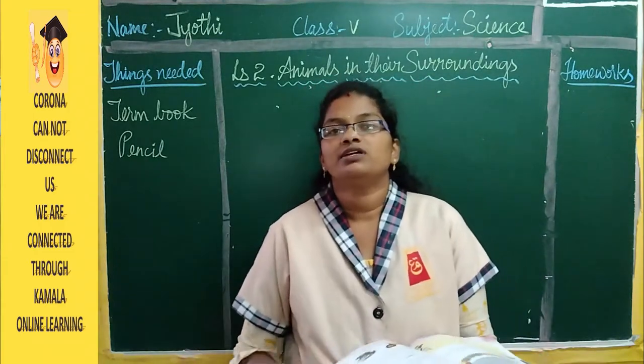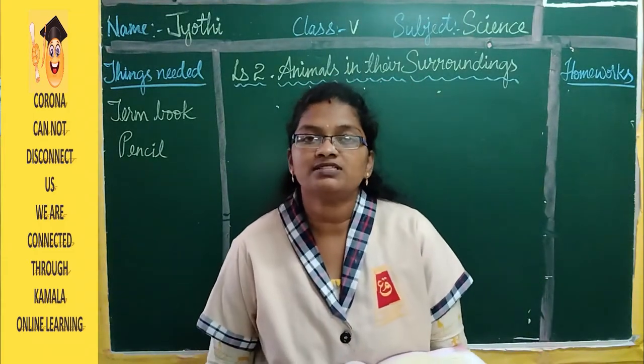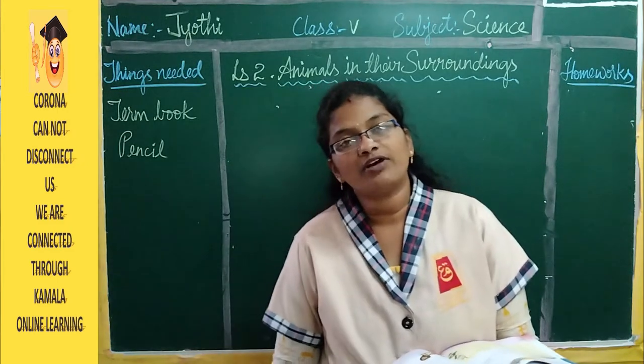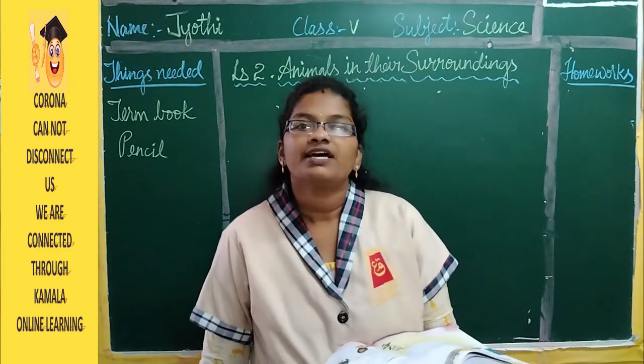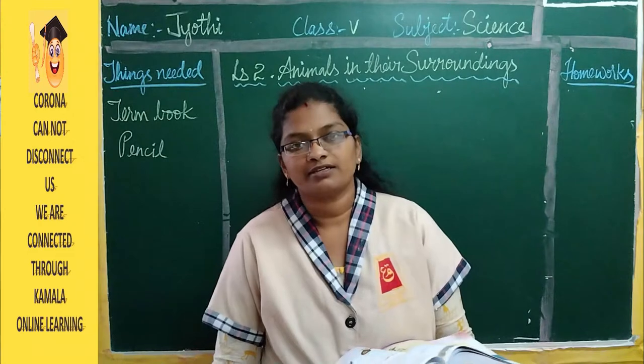We have five types of animals: terrestrial, aquatic, amphibious, arboreal, and aerial.